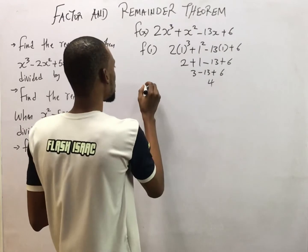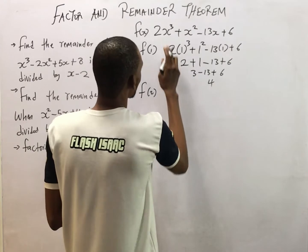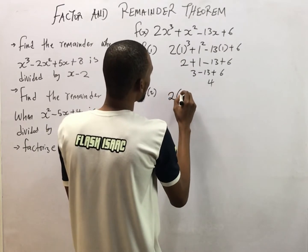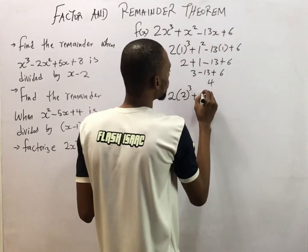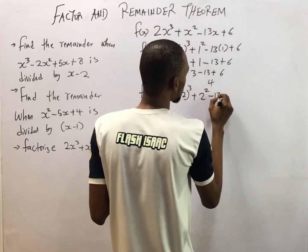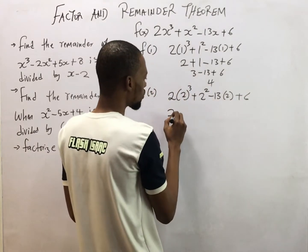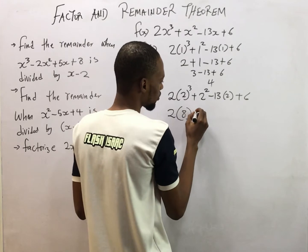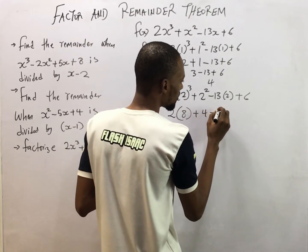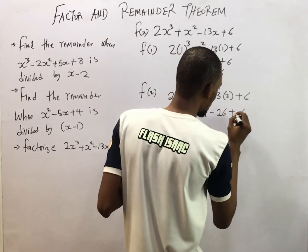So let's try 2 to see if the remainder will be 0. So putting S as 2, we have 2 times 2 raised to the power of 3 plus 2 squared minus 13 times 2 plus 6. This is 2 times 2 raised to the power of 3 is 8 plus 4 minus 13 times 2 is 26 plus 6.